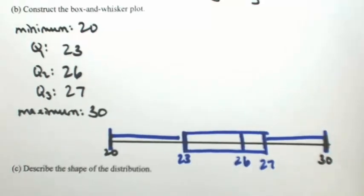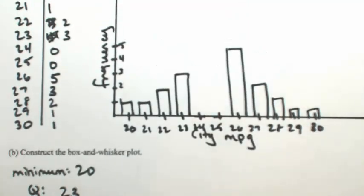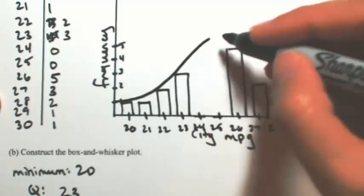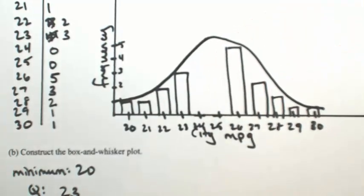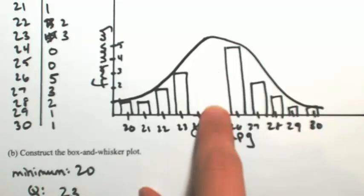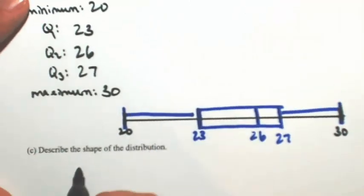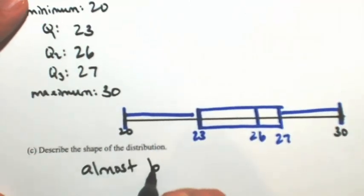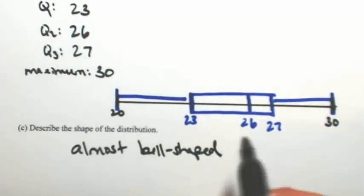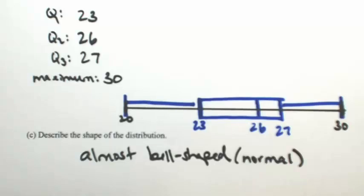The follow-up question is to describe the shape of the distribution. If you look at the histogram, if I were to draw a curve over this, I would say that it's almost bell-shaped. The reason I'm saying almost bell-shaped is because we do have some missing parts between the 24 and the 25, so I'm going to say it's almost bell-shaped. That's actually another way to say a normal distribution, so it's almost normal based on the shape of it. But keep in mind that it's not completely normal because we did have some missing bars.